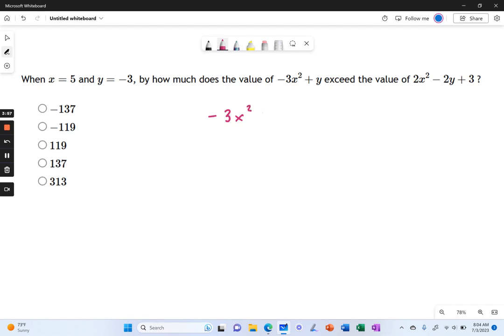I have negative 3x squared plus y. And I'm going to do minus this thing right here, which is 2x squared minus 2y plus 3. And I like it better this way because it kind of keeps everything straight for me. I can see the x squareds go together, the y's go together, and so on.